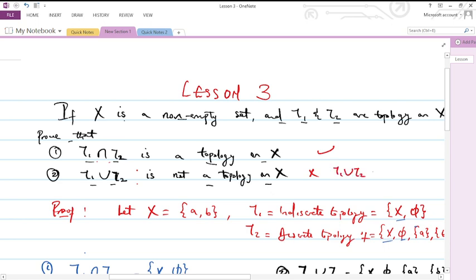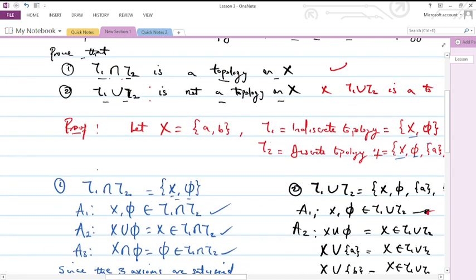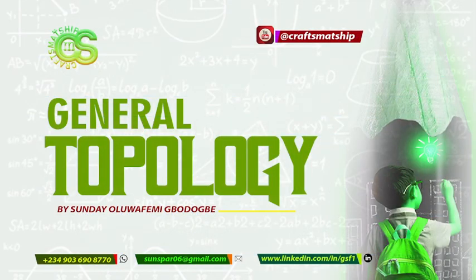All right, so that means that intersection of two topologies is a topology on X, but the claim that union is not a topology is not correct. If you have not subscribed to this channel, please kindly do and turn on the notification button. All right, so we stop here for today. You can watch out for the next video. Thank you so much for watching. See you next time.